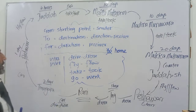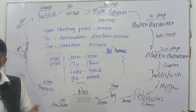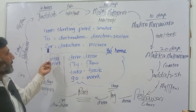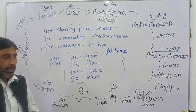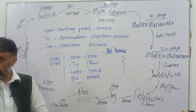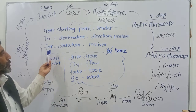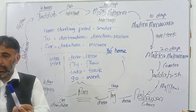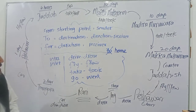We also use 'for' for duration of time — how long any activity lasted, whether in the past, present, or future. For example: my uncle worked in Saudi Arabia for six years; my uncle has worked in Saudi Arabia for twenty years and is still there. We also use 'for' before the indirect object or receiver: I bought this marker for Bilal.